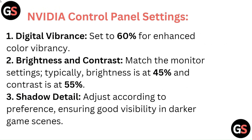Nvidia Control Panel Settings — Digital Vibrance: Set to 60% for enhanced color vibrancy. Brightness and Contrast: Match the monitor settings — typically brightness at 45% and contrast at 55%.